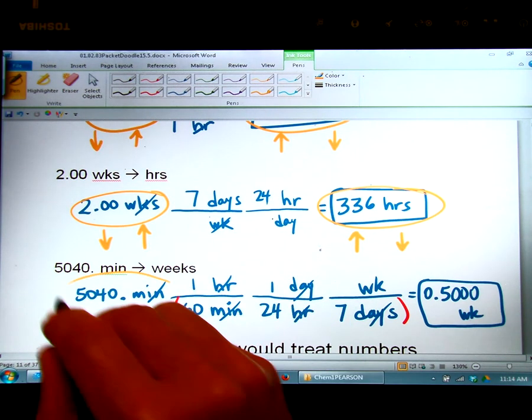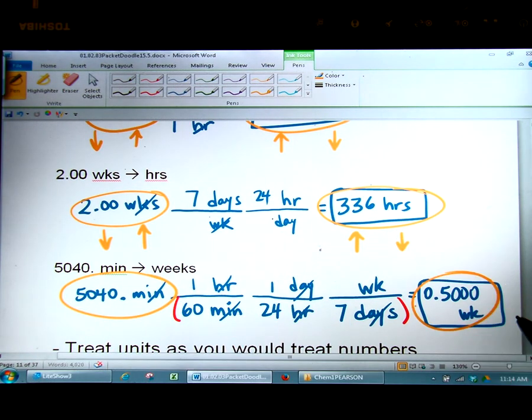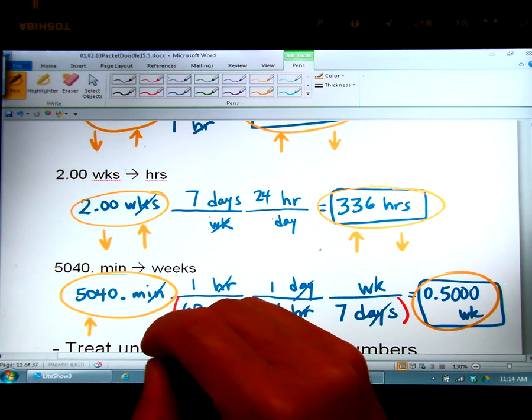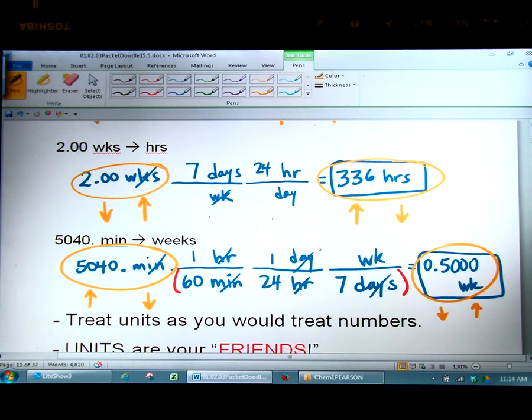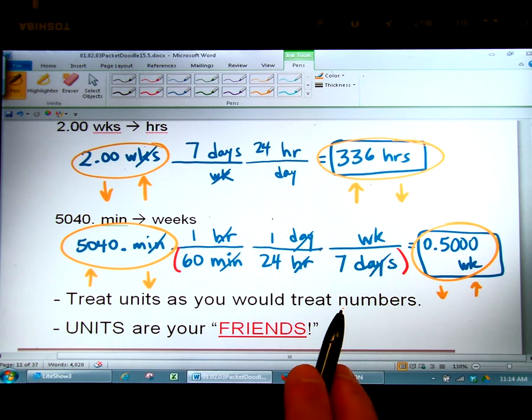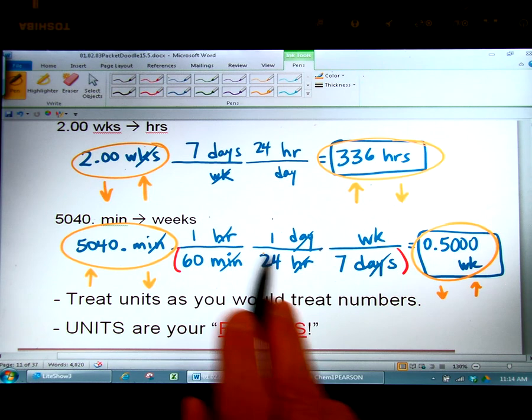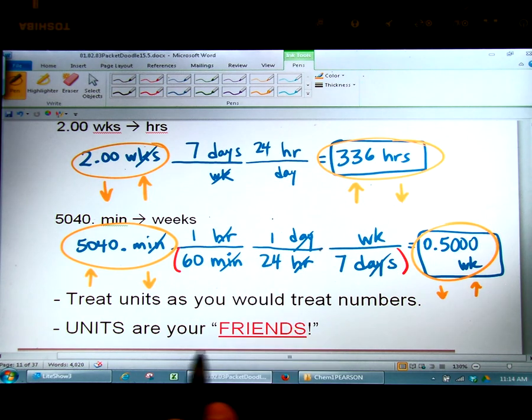And lastly, 5,040 minutes is the same thing as half of a week. If you have a large number with a small unit, it's the same thing as a small number with a large unit. So the moral of the story here, you would treat units as you would treat numbers. You can divide out units just like you could divide out numbers. And units are your friends.